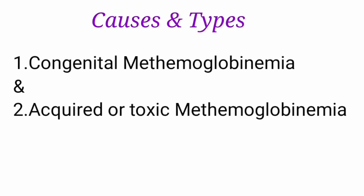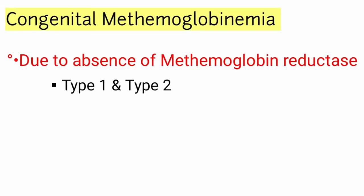Coming to causes and types: based on the cause, methemoglobinemia can be classified into two types — congenital methemoglobinemia and acquired or toxic methemoglobinemia. Congenital methemoglobinemia is inherited and is a rare condition. It is due to lack or absence of methemoglobin reductase, which is responsible for the conversion of methemoglobin to normal hemoglobin. In the absence of this enzyme, it leads to accumulation of methemoglobin. Congenital methemoglobinemia is subclassified into type 1 and type 2 based on the site of the enzyme defect.